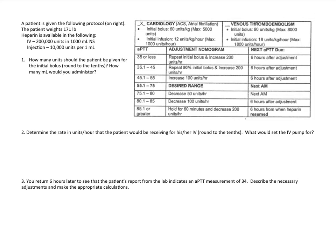If the blood is too thin — meaning it's really not clotting — the patient is likely in the upper range and we'll need to decrease the amount of heparin given. However, if it's still clotting too quickly, we might need to either repeat the initial bolus and increase the infusion rate, or make other adjustments to the heparin administration. But that's the big picture — let's get into the calculations.